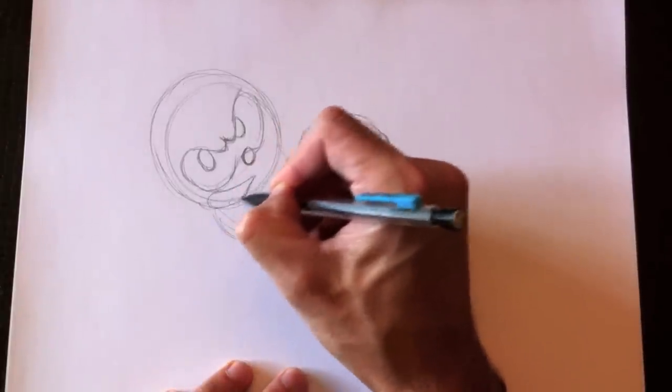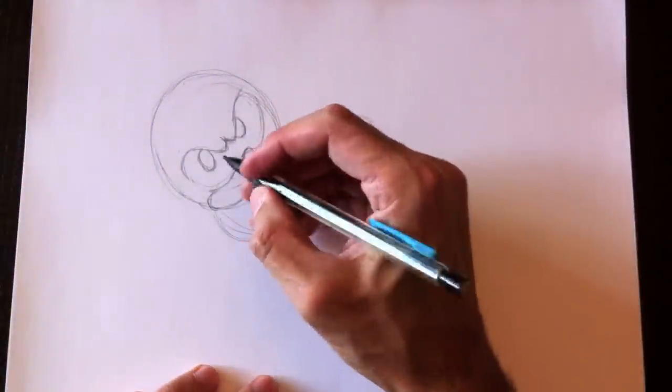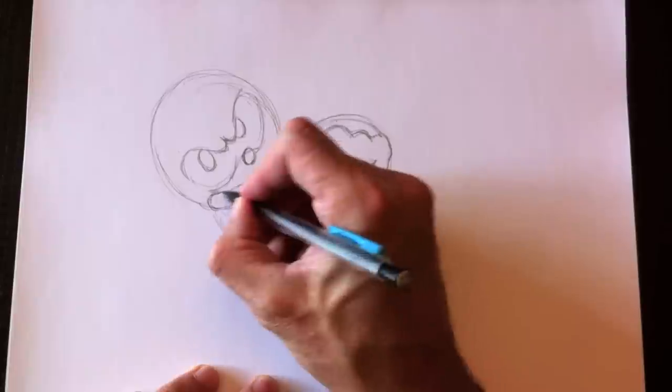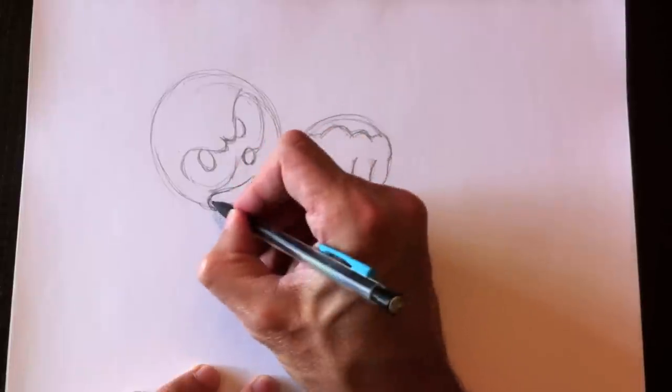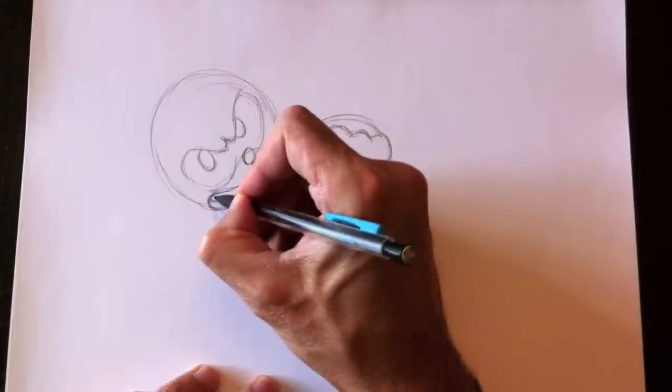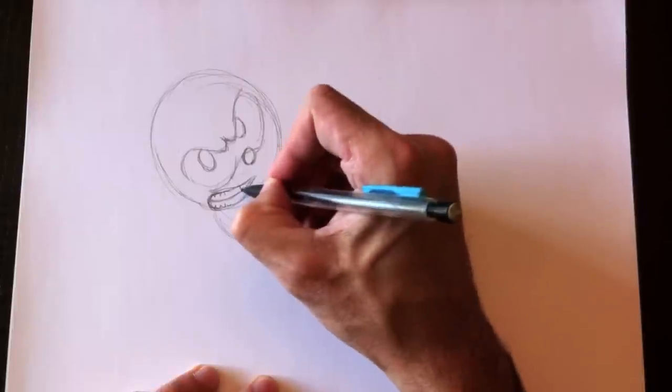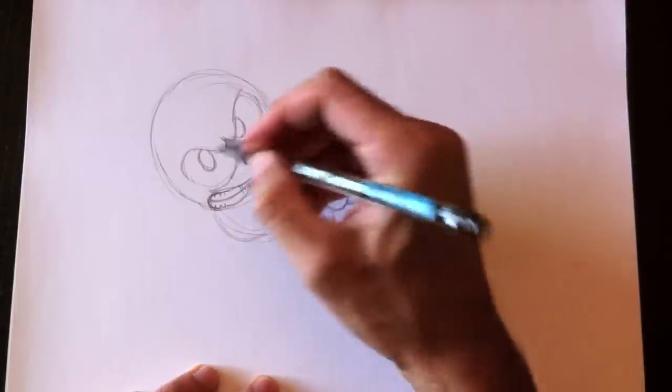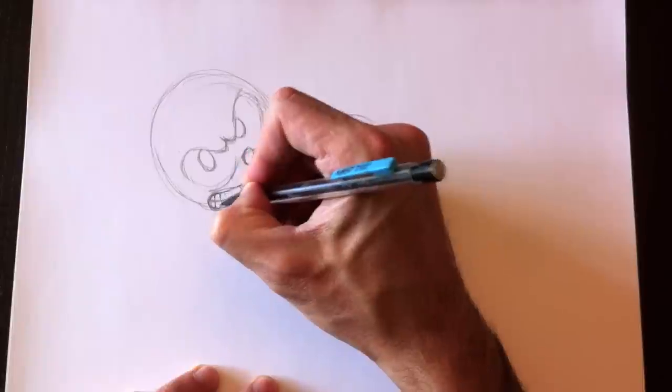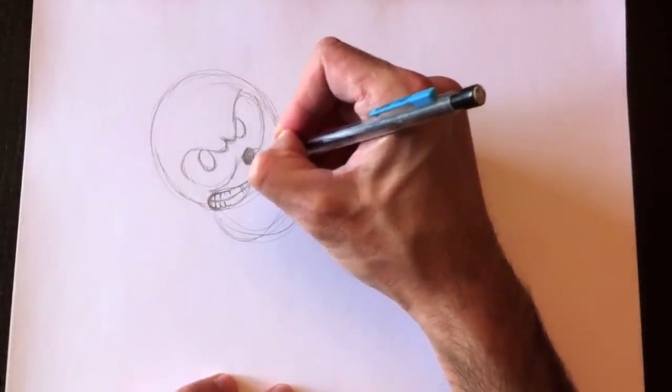Here's his mouth. We're going to erase the lines we don't want to keep, retrace the outline of the mouth and put in the teeth. Here's the denture line with a few teeth here and there inside. Let's color in his nose.